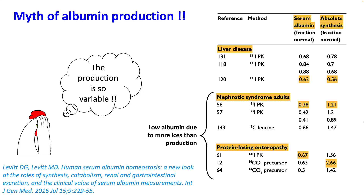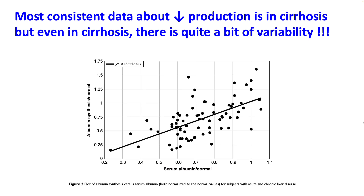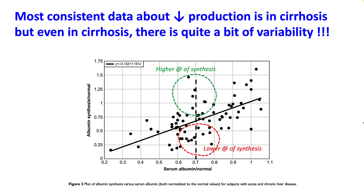You can see that the rate of synthesis in nephrotic syndrome and protein-losing enteropathy is increased. However, production is very variable. Even though the most consistent data about decreased production is seen in cirrhosis, there is quite a bit of variability — you will find cirrhotic patients with normal to high rates of synthesis, while some cirrhotics will have lower rates.